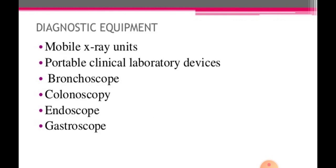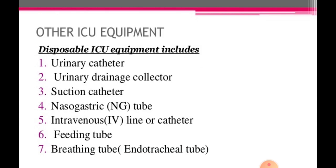Diagnostic equipment includes mobile x-ray units, portable clinical lab devices, bronchoscope, colonoscopy, endoscope, and gastroscope. Other ICU equipment includes urinary catheter, urinary drainage collector, suction catheter, NG tube, IV line or catheter, feeding tube, and breathing tube that is endotracheal tube.